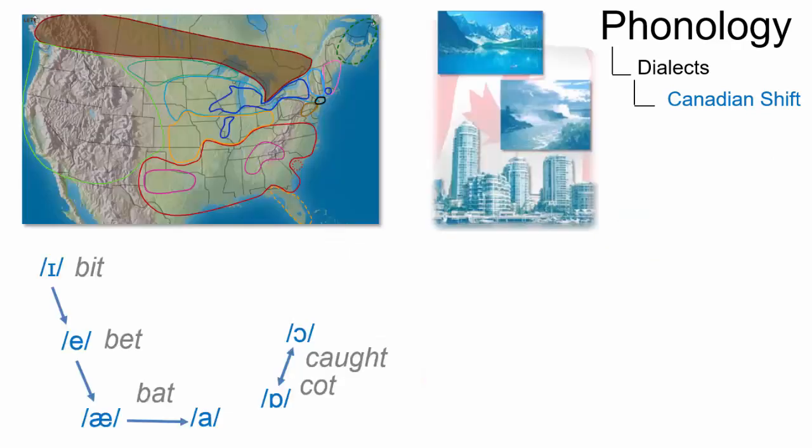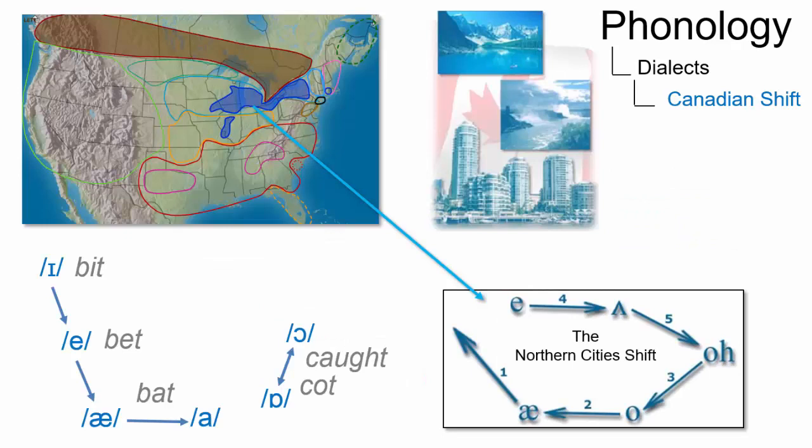The Canadian shift is somehow opposite to the Northern Cities shift, where the low back vowel advances to a low central position. Thus the word stack in Canada is pronounced with the same vowel as in the word stock in Detroit just across the lakes.